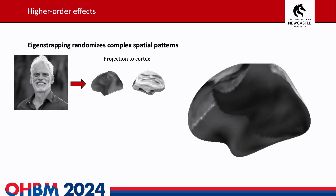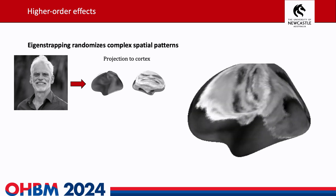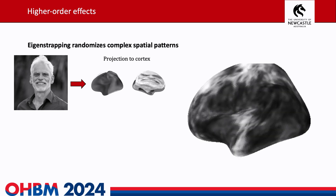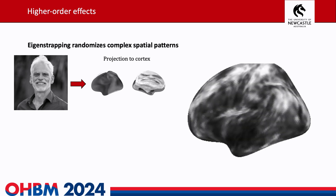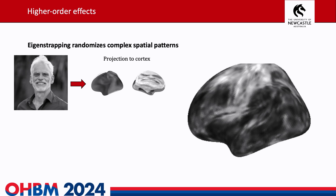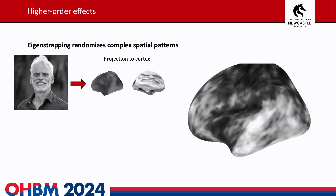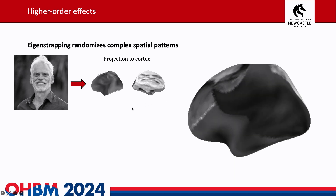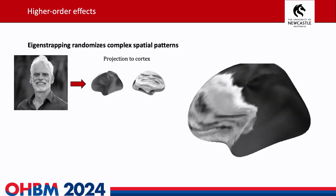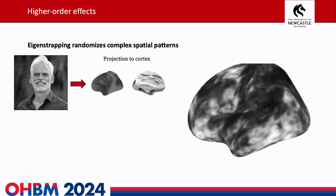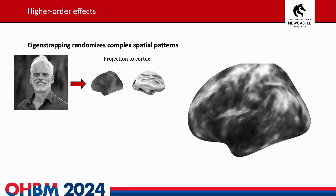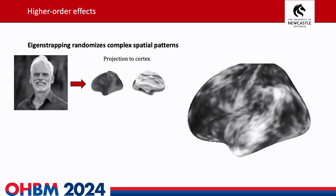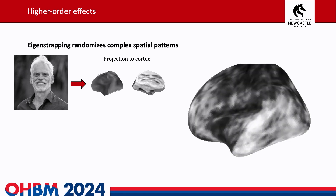What about higher order effects? To demonstrate, I imagine projecting my supervisor's face to my brain and spinning it — and I can eigenstrap it as well. But seriously, we can take an immediately recognisable object like a face — full of third and fourth order correlations — project it to the cortex, and see whether we can randomise those features. In the video, the spin test simply rotates the patterns, while eigenstrapping completely destroys them. All of these maps have the same low order autocorrelation and smoothness, but clearly one is a much more well-formed null.